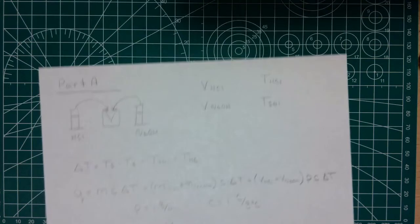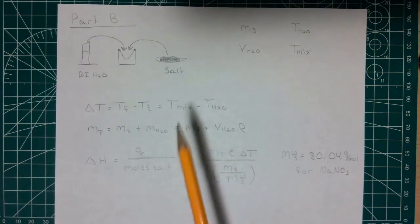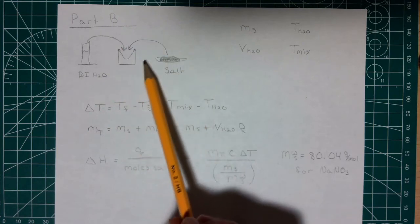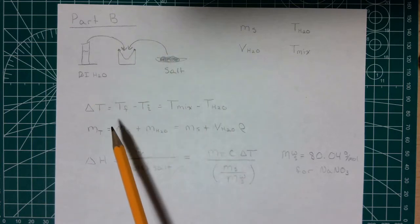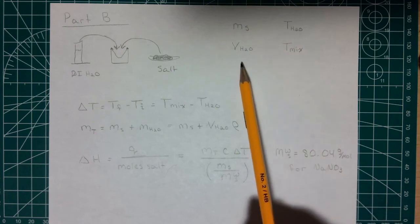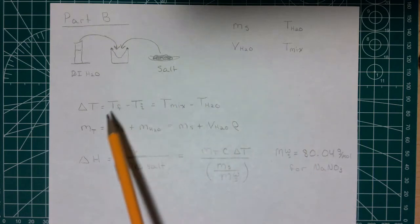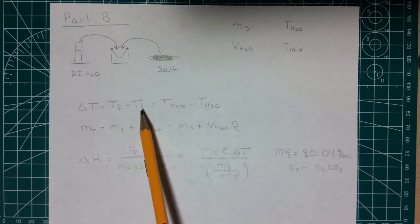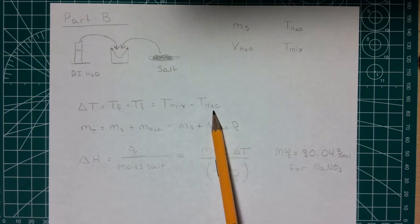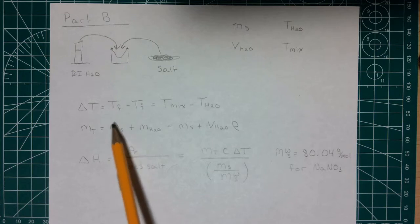Part B is pretty much the same thing, except now one reactant is a solid salt. We add some water and the salt into the calorimeter, the salt dissolves, and the temperature will either go up or down in that process. We're given the mass of the salt, the temperature of the water, the volume of the water, and the final temperature of the salt-water mix in the calorimeter. The change in temperature is again T_final minus T_initial, where the initial temperature is that of the water.